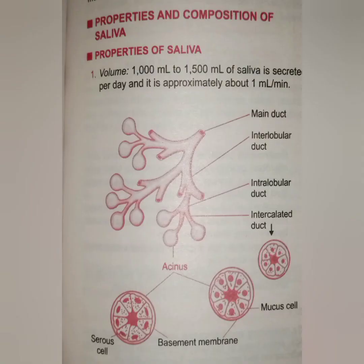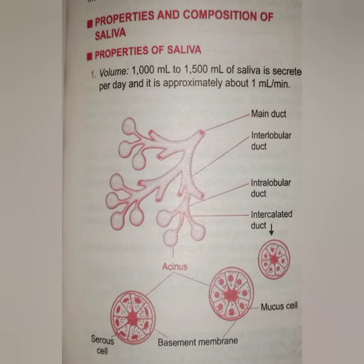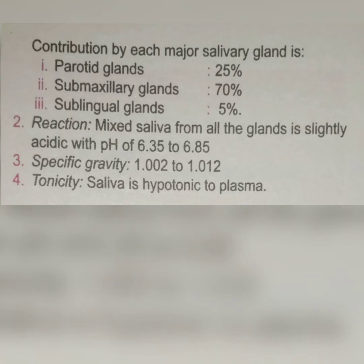The properties of saliva: about 100 milliliters to 1500 milliliters of saliva is released per day, approximately 1 milliliter per minute. The main ducts include interlobular ducts, intralobular ducts, and intercalary ducts — these are the duct-like controlling tubes especially for saliva.